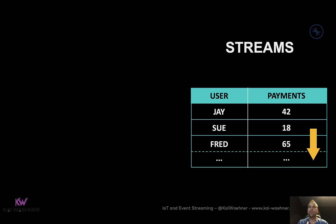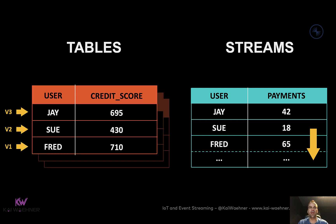Today we have streams which change data in real time — for example, a payment where each user does a specific transaction is a single event, stateless information that doesn't change after it happened. But you also have tables, like in a relational database or data lake, where you keep state and update things — like updating a credit score after every payment using a business rule, algorithm, or machine learning model. Event streaming does not mean just stateless information; you can also keep stream information in tables to have stateful business applications.